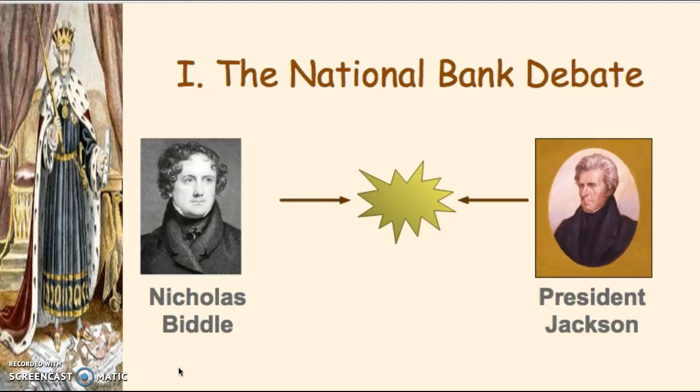The bank still had five years left in its charter even after the failed rechartering. Jackson wanted it gone immediately. He ordered Secretary Louis McLane to withdraw all money from the National Bank, but McLane refused, saying it would hurt the economy. Jackson fired McLane and promoted William Duane to Secretary of Treasury — Duane also refused. Jackson fired him too. Attorney General Roger Taney then proposed a different approach: rather than withdrawing all the money, simply stop making new deposits and use the existing funds to pay off debts, effectively draining the National Bank.